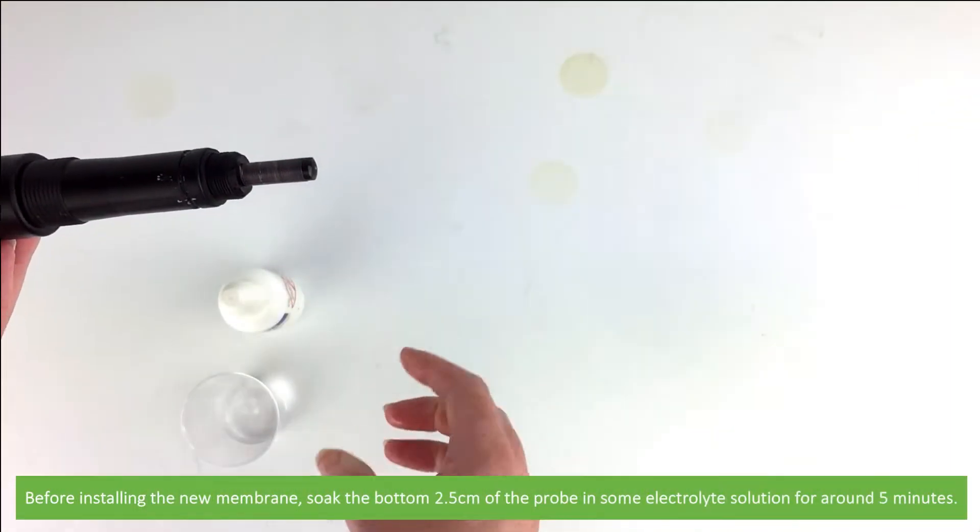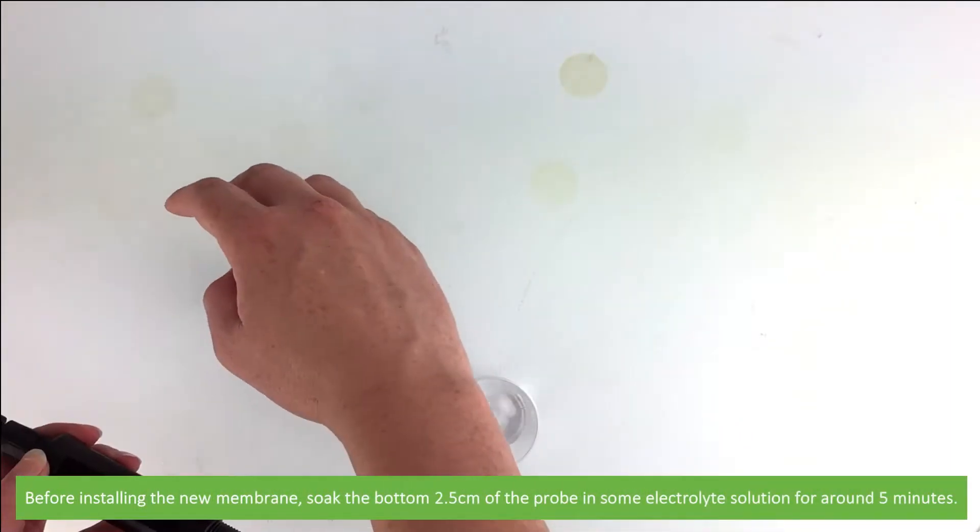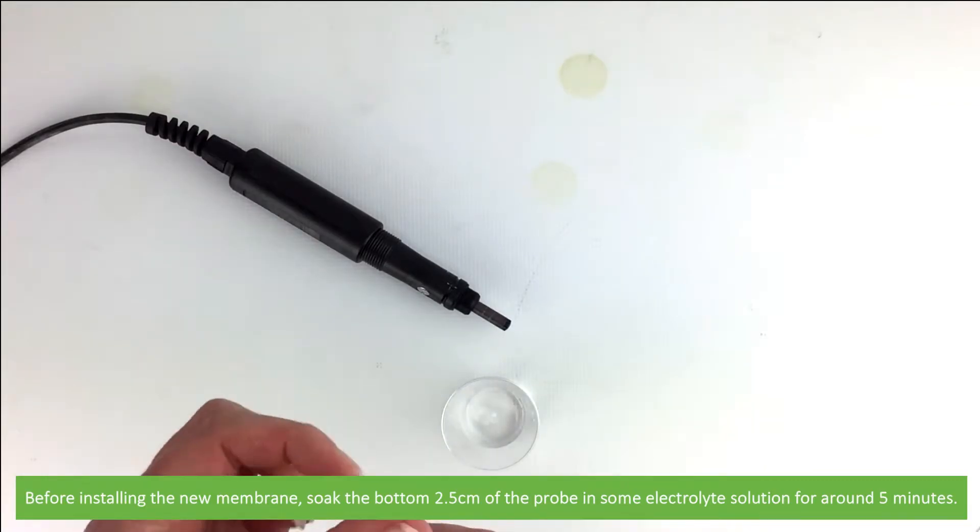Before installing the new membrane, soak the bottom 2.5 centimeters of the probe in some electrolyte solution for about 5 minutes.